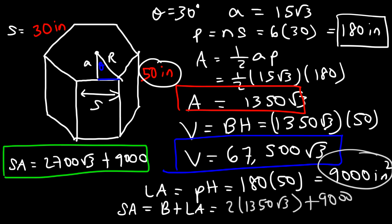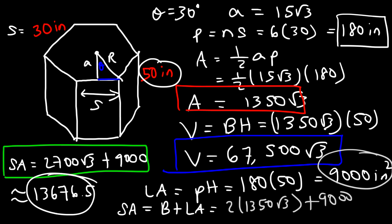And so that's it — now you know how to calculate the lateral area, surface area, and the volume of a hexagonal prism.